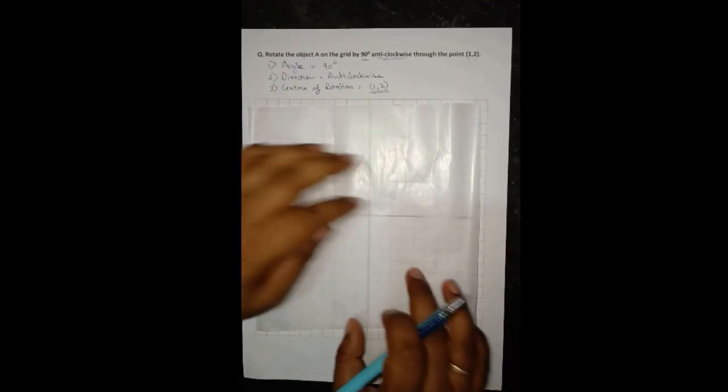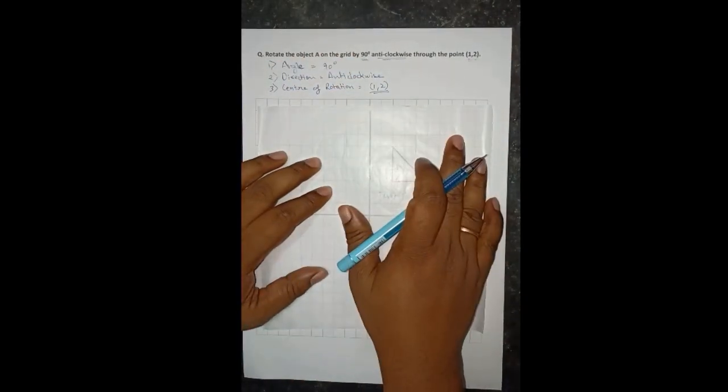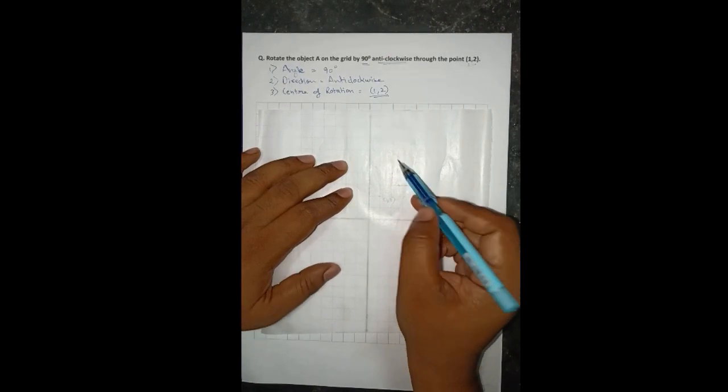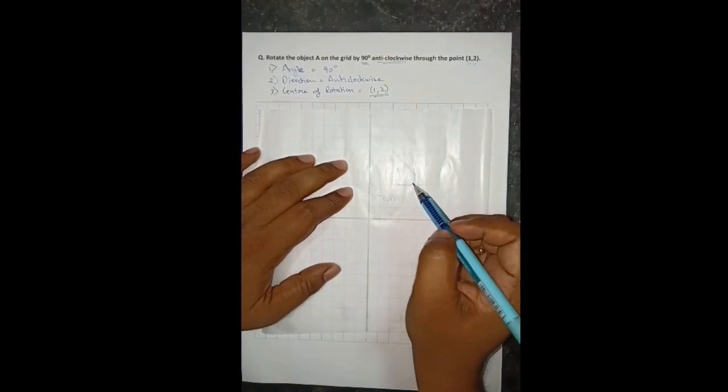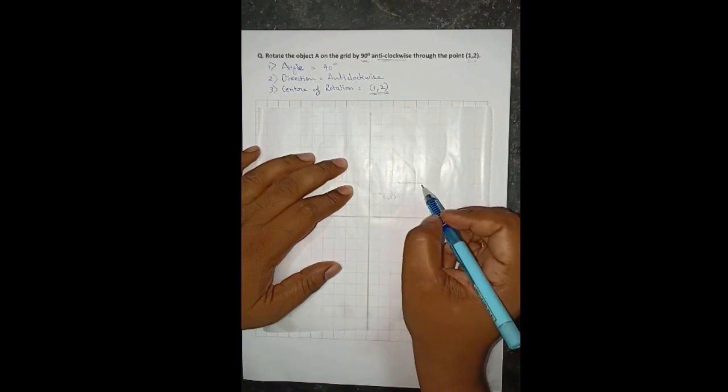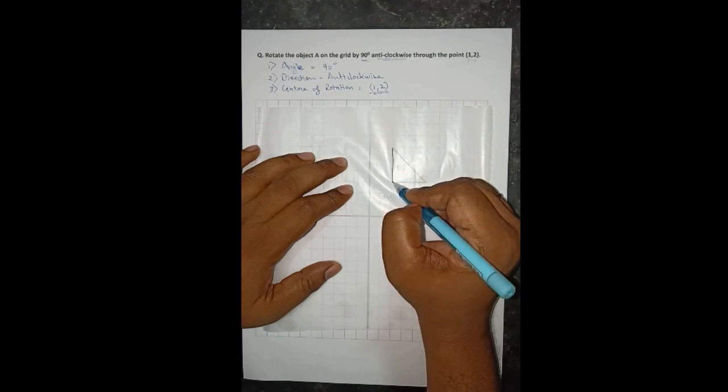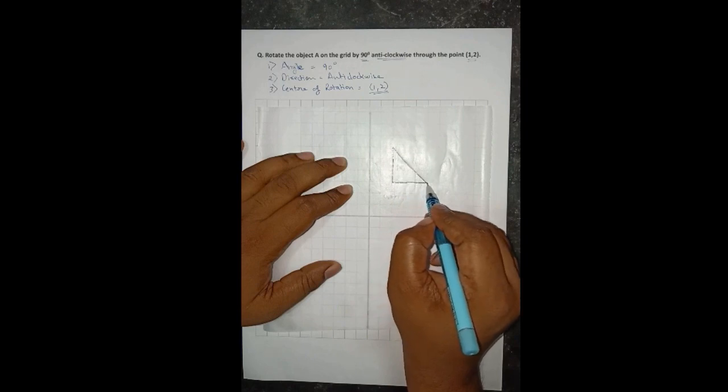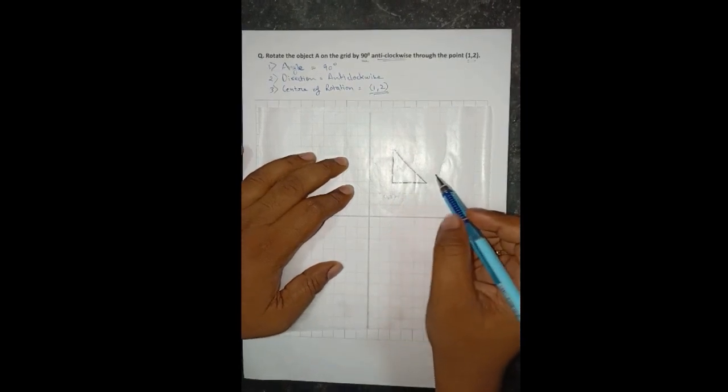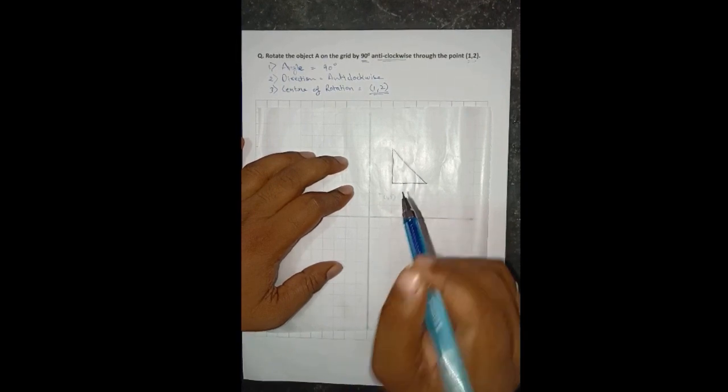Now we have to take a tracing paper like this and put it over this grid so that we can easily trace the object. As you can see I can easily trace the object on this tracing paper. I'll have to copy this object and draw it as it is on the tracing paper. So here I have copied the object on this tracing paper.